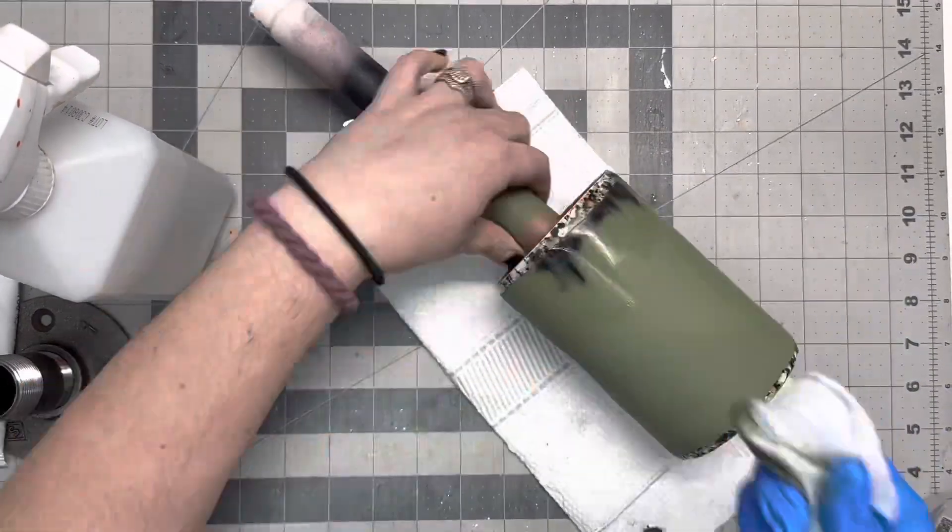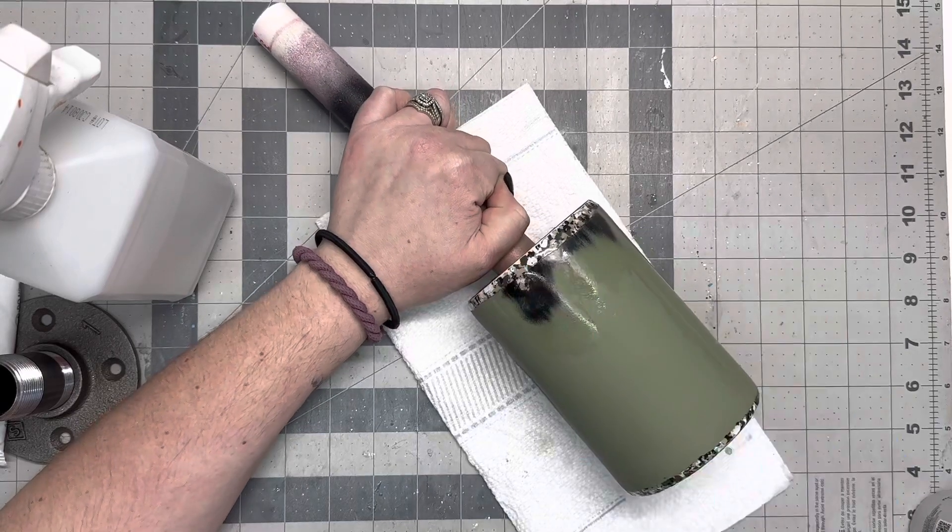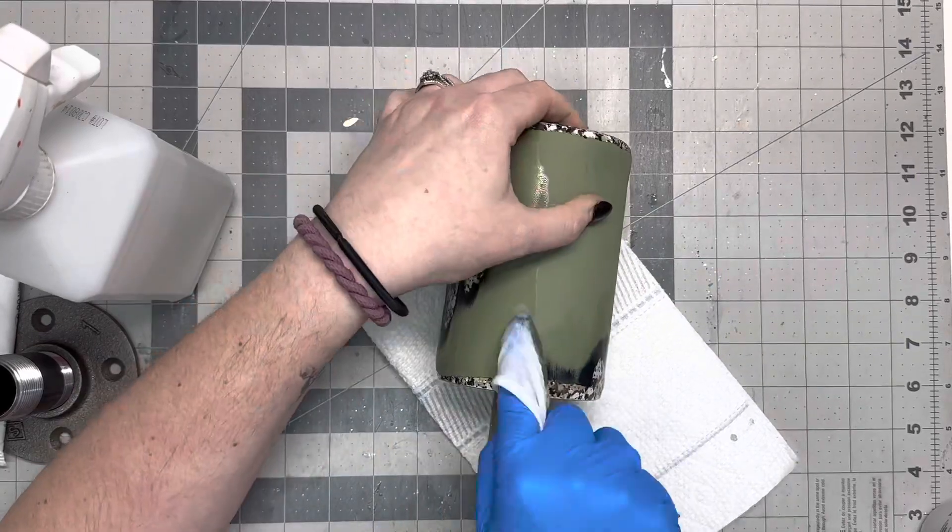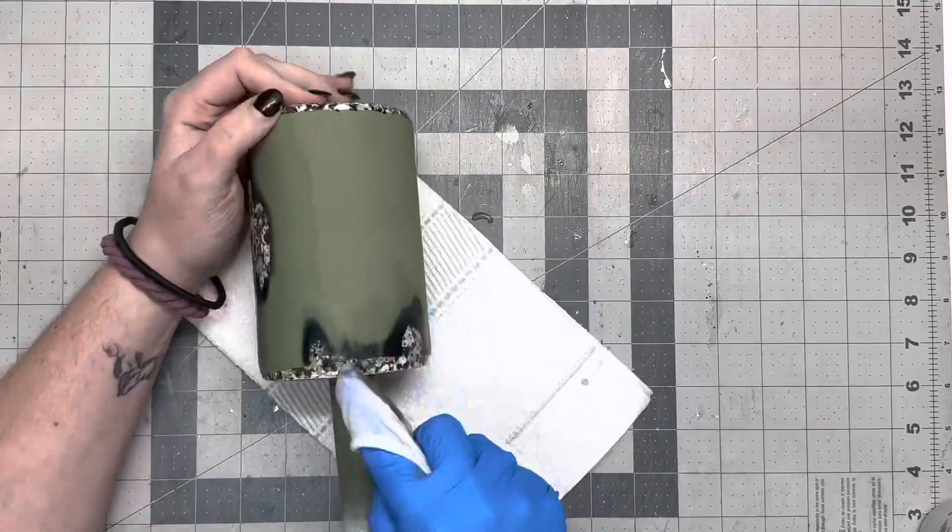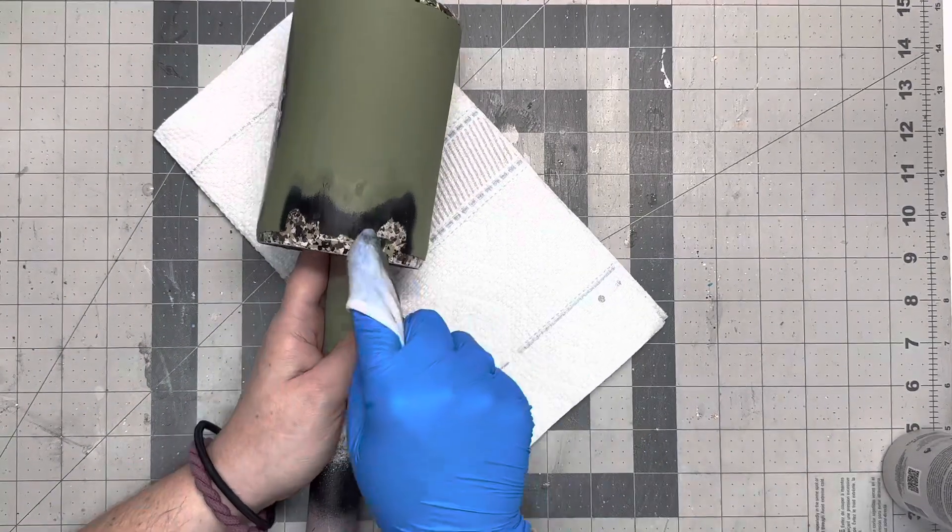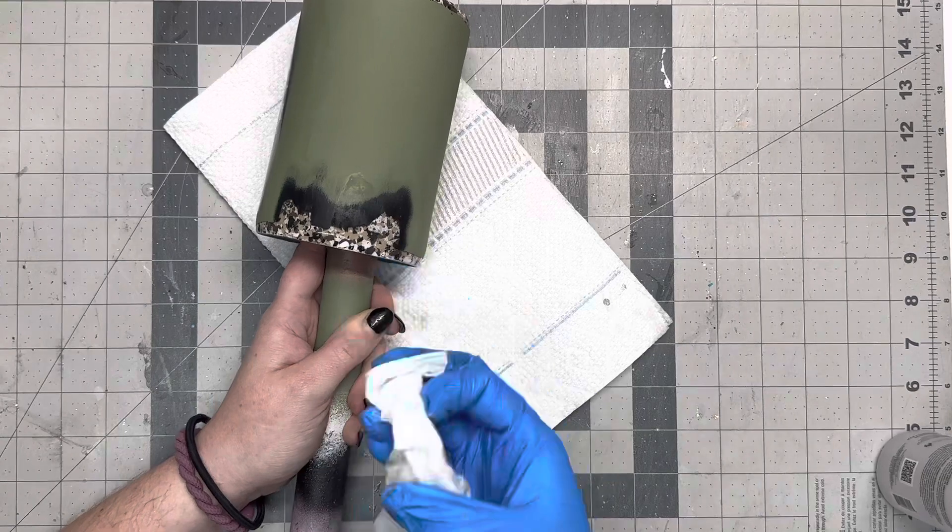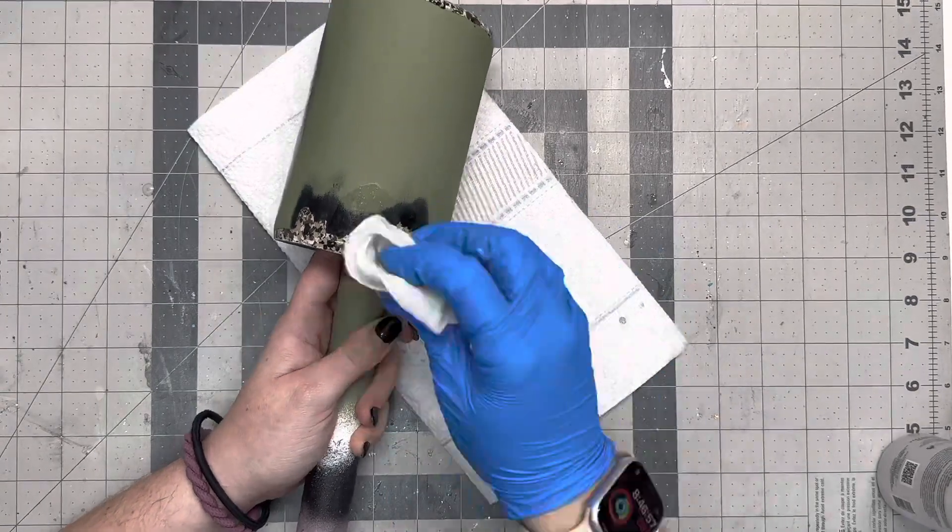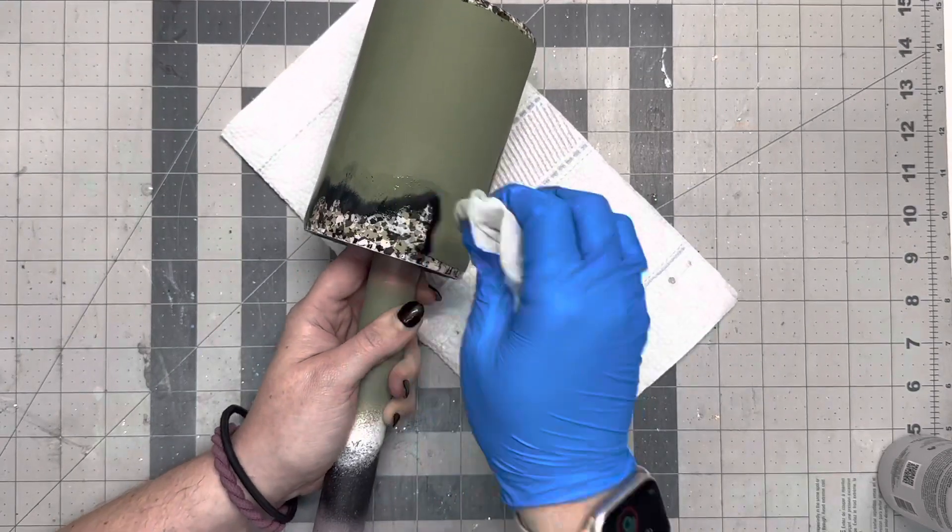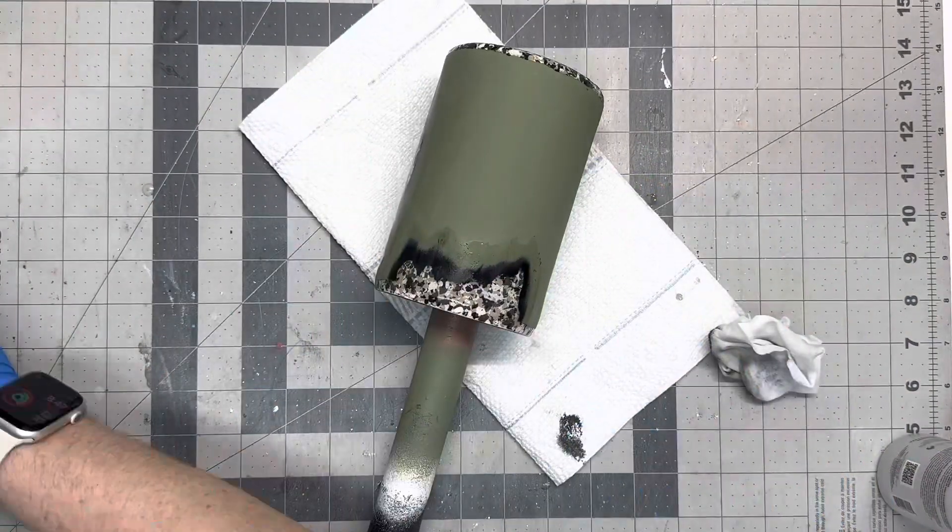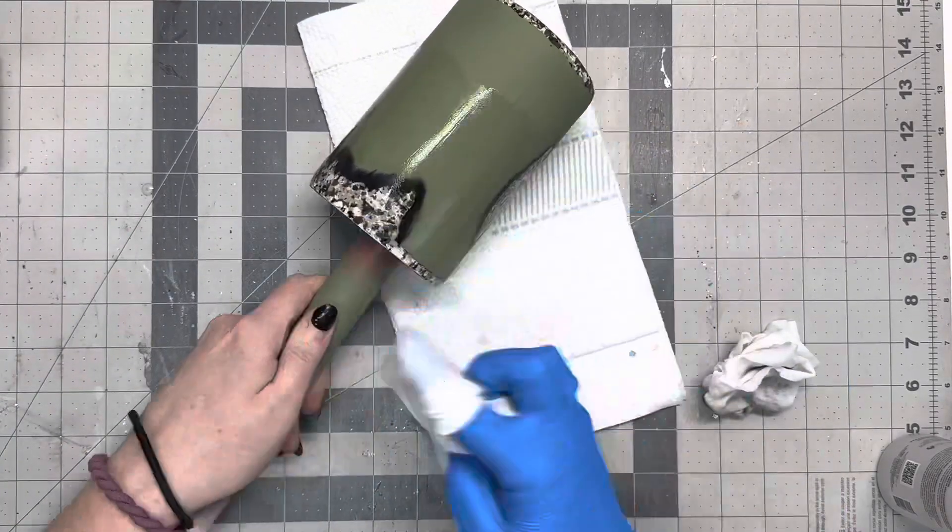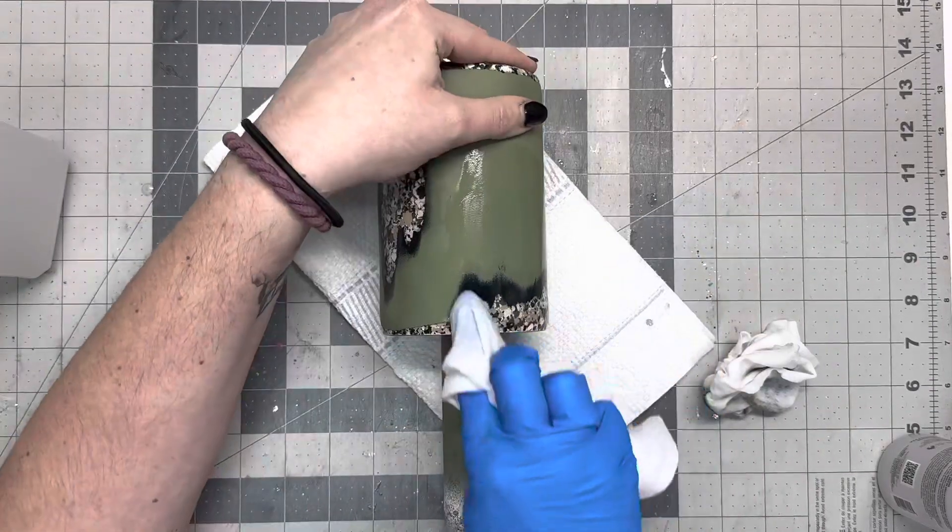Once I've got all of the distressing done in the rims and on the center I'm gonna go in with just the rubbing alcohol and we're going to distress the edges just to expose that black. I don't really want to pull away a lot of paint to expose the paint chips. We're gonna go around with the rubbing alcohol to expose that black to kind of give it more of a distressed look.